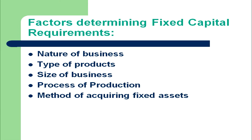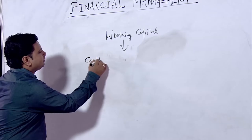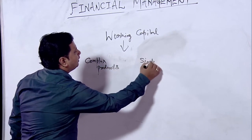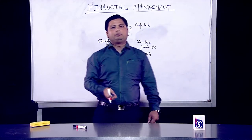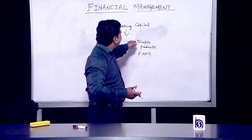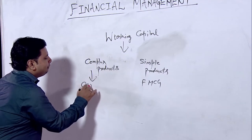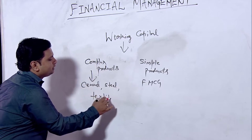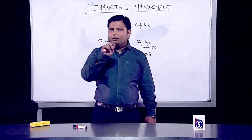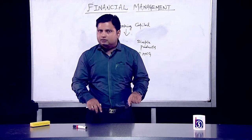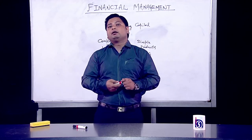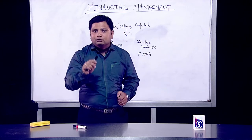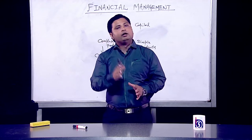The second factor is type of products — complex products versus simple products. Simple products are FMCG items like soap, oil, toothpaste, toothbrush. Complex products include cement, steel, textiles, ship manufacturing, or plane manufacturing. An organization producing complicated products like cement, steel, or textiles requires large equipment, and therefore the requirement of fixed capital would be high compared to an organization producing simple FMCG products.